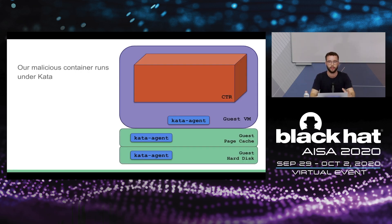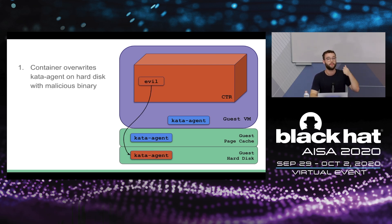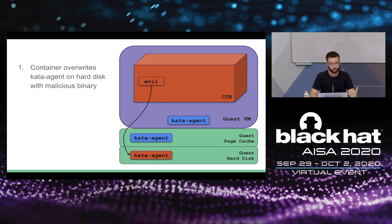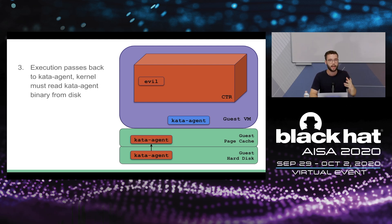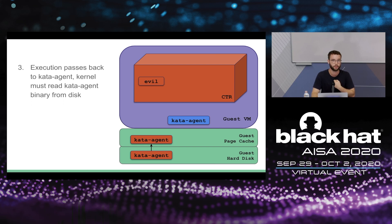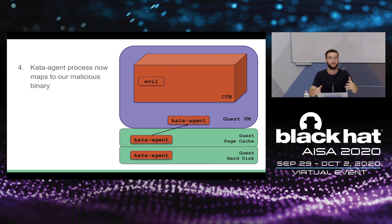Here's how the attack works: from the malicious container, we first override the Kata agent binary on the hard disk. Nothing really happens because the Kata agent process's memory is mapped to the version in the page cache, which isn't malicious. We then allocate small chunks of memory to clear the Kata agent from the page cache. Now, when execution passes back to the Kata agent process, the kernel realizes it needs to fetch the Kata agent from the hard disk again — and it fetches our malicious version. The Kata agent process now maps to our malicious version and runs the code we wrote to the guest hard disk.